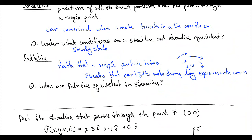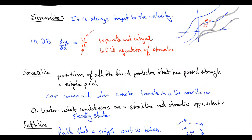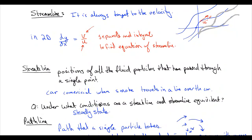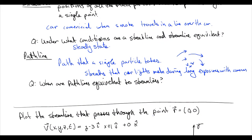Pathlines are still not quite as useful as streamlines, but streamlines require a very accurate computational model of the fluid, which isn't always possible. At high Reynolds numbers we still don't have a very accurate way of simulating fluids. Navier-Stokes equations become computationally intractable — this scales with Reynolds number — so at Reynolds numbers of around a million, direct numerical simulation of Navier-Stokes becomes very difficult.